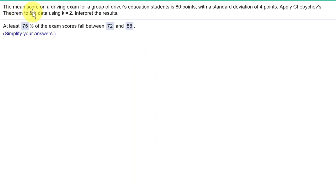One last example. We are given the mean score is 80 and the standard deviation is 4 points, but we are not given the sample size. Not to worry though, because we are given k equals 2 standard deviations. We can use the calculator to help us find the proportion between the lower and upper limits required by this problem.